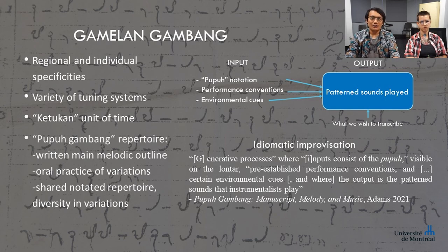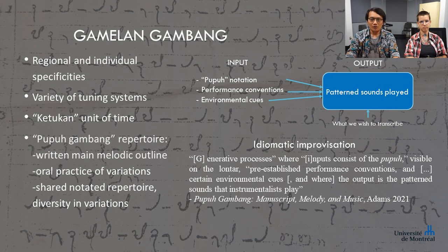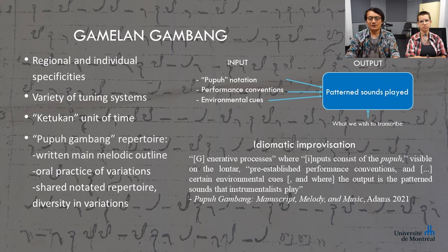Complex variations arise from oral tradition. In Pupuh Gambang Manuscript, Melody, and Music, Jonathan Adams describes the idiomatic improvisation of Pupuh Gambang practice as generative processes where input consists of the pupuh visible on the notation, pre-established performance convention, and certain environmental cues, and where the output is the pattern of sounds that instruments play. While this repertoire is shared across the island of Bali, the diversity of played variations is vast.